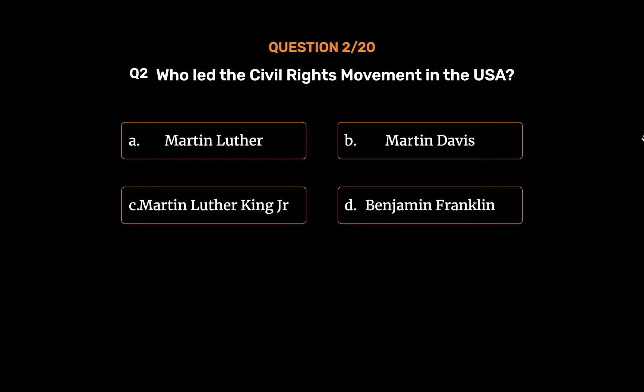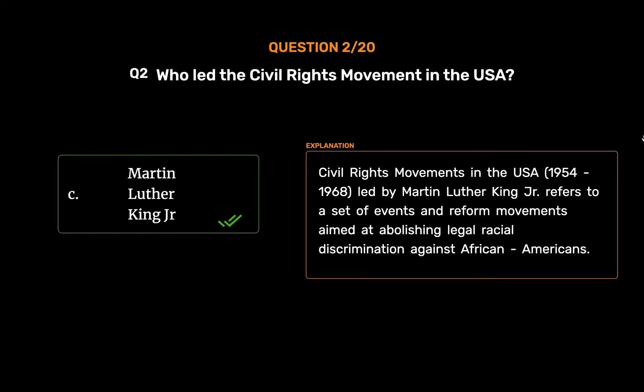The correct answer is Option C: Martin Luther King Jr. The civil rights movement in the USA, 1954–1968, led by Martin Luther King Jr., refers to a set of events and reform movements aimed at abolishing legal racial discrimination against African Americans.